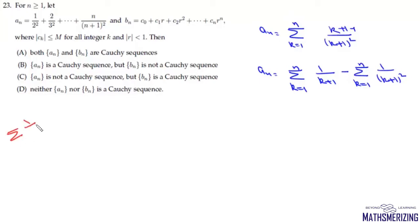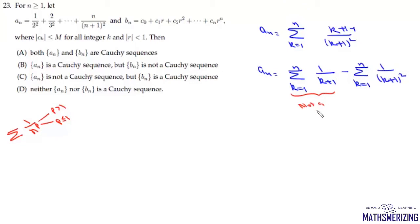...for harmonic-type series 1/nᵖ, they are convergent if p is greater than 1 and divergent if p is less than or equal to 1. So for the summation 1/(k+1), it is not a convergent sequence, so it is not a Cauchy sequence. But 1/(k+1)² will be a Cauchy sequence. So the first part is not Cauchy and the second part is Cauchy.